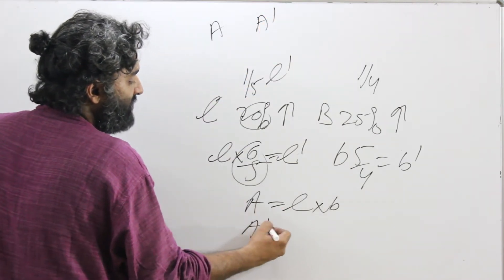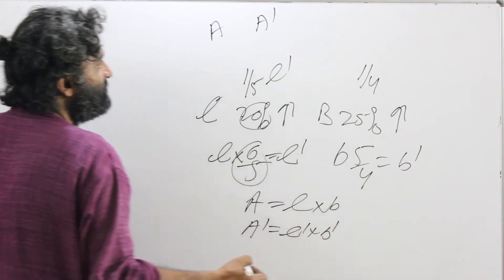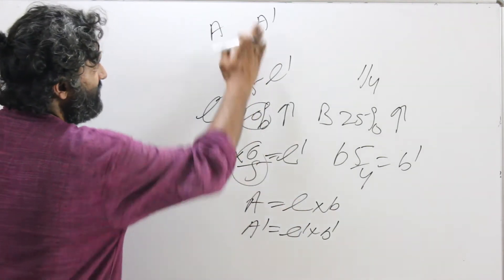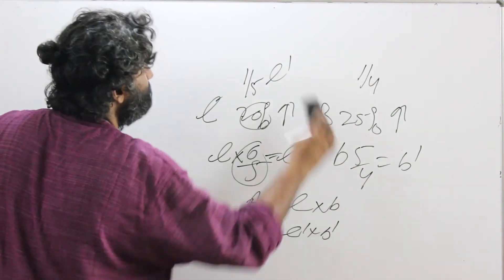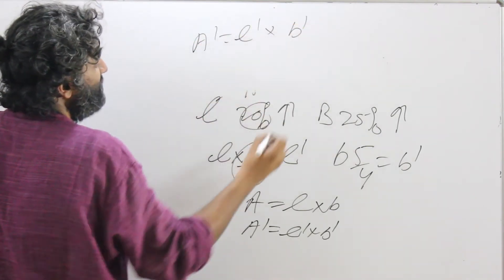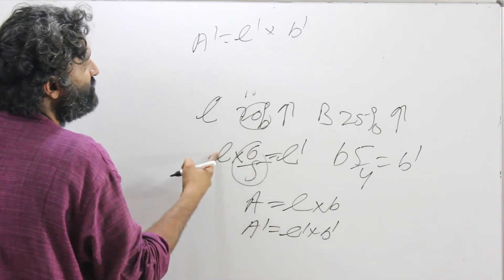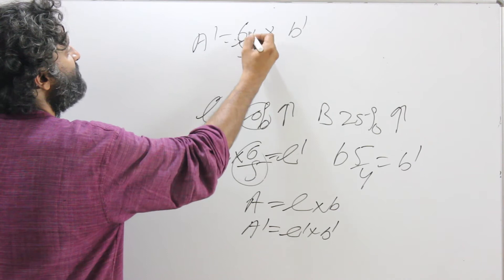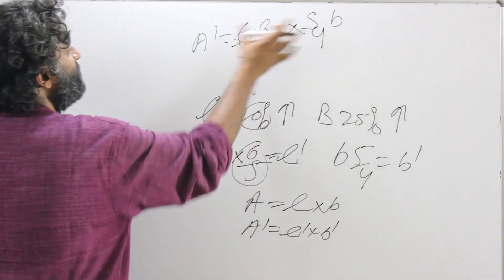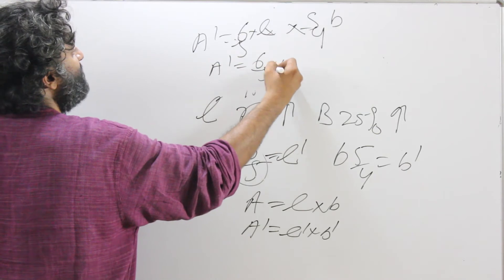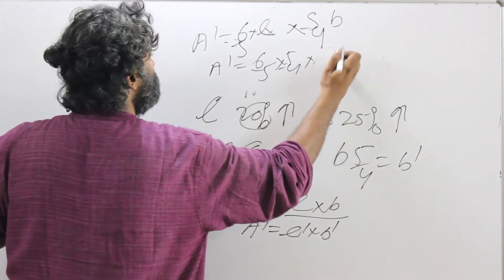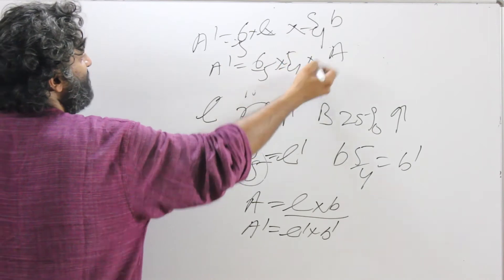The old area is length into breadth. The new area will be new length into new breadth. Replacing: new length is 6 by 5 of old length, and new breadth is 5 by 4 of breadth. Putting these two multiplying factors together: new area equals 6 by 5 into 5 by 4 into length into breadth. Length into breadth is just the old area, so: new area is 6 by 5 into 5 by 4 times the area.